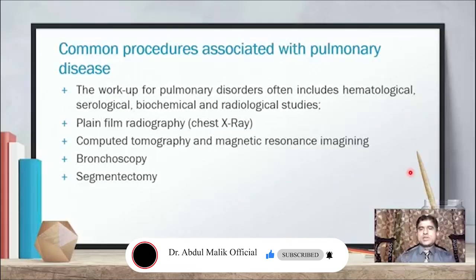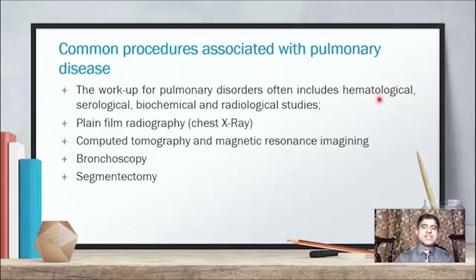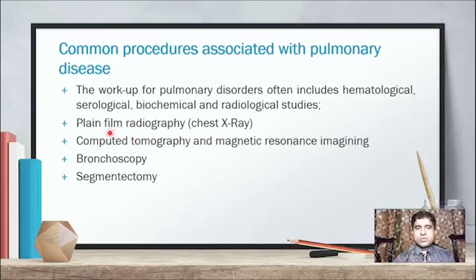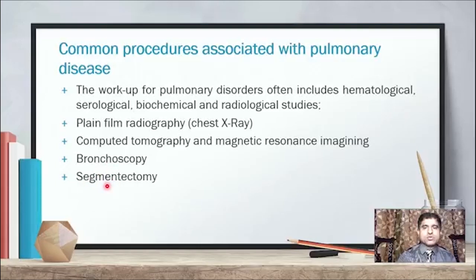Common procedures associated with pulmonary diseases include: hematological blood sample tests, serological serum tests, biochemical and radiological studies including X-ray, MRI, CT scan, and PET scan. Plain film radiography — chest X-ray — is the first investigation for TB and various diseases. Computer tomography (CT scan), magnetic resonance imaging (MRI), bronchoscopy to examine the bronchioles, and segmentectomy — surgically removing a segment if needed — are all used to save the lungs.